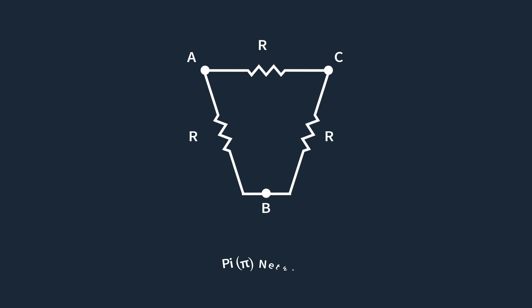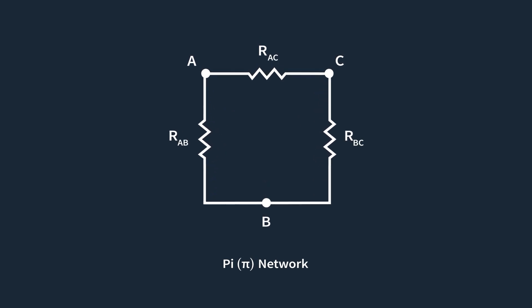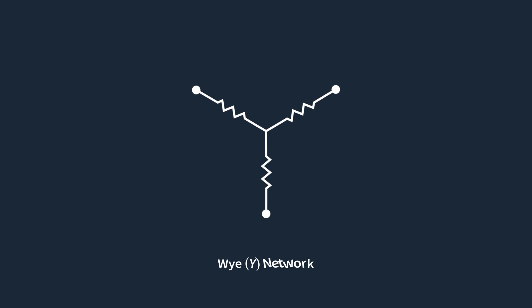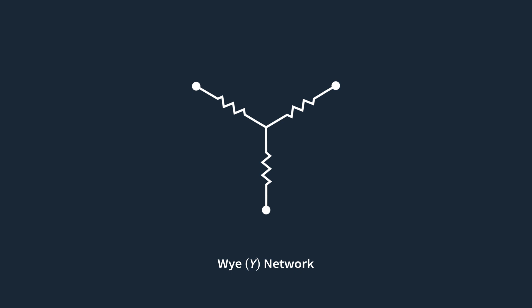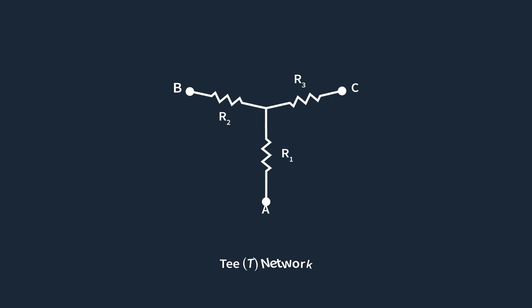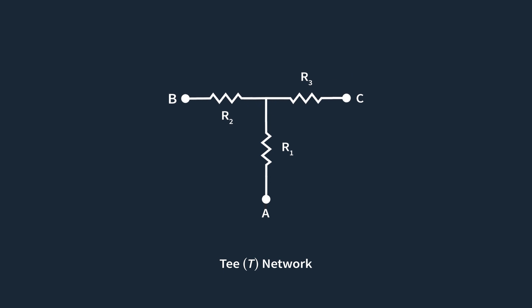When drawn with 90-degree angles, the delta configuration can sometimes be referred to as a pi circuit because it takes the shape of a pi symbol. In the Y configuration, three resistors are connected to a common central or neutral point, labeled R1, R2, and R3, each connecting the central point to one of the nodes A, B, and C. The central node is often connected to ground for safety and voltage stability. The Y configuration is named for its resemblance to the letter Y, and when drawn with 90-degree angles it looks more like a T, sometimes called a T configuration.